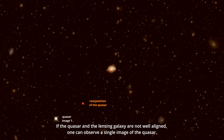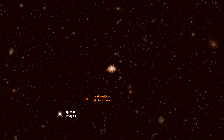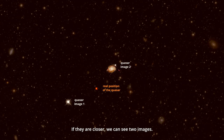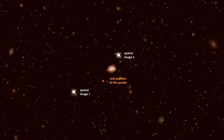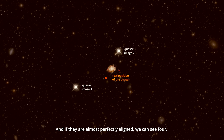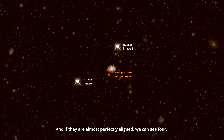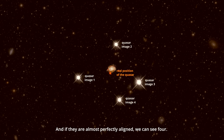If the quasar and the lensing galaxy are not well aligned, one can observe a single image of the quasar. If they are closer, we can see two images. And if they are almost perfectly aligned, we can see four.